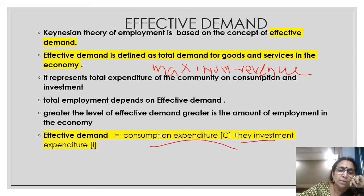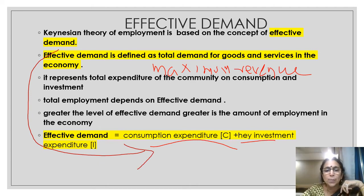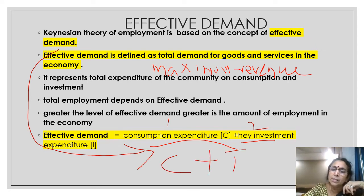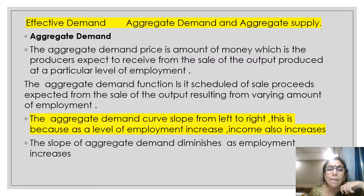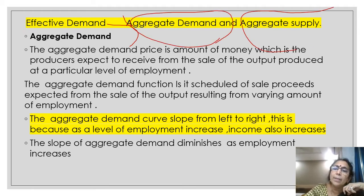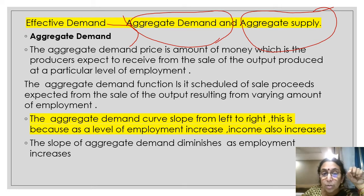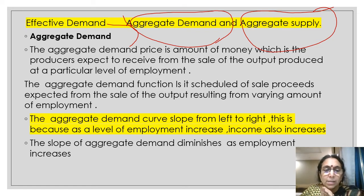What is effective demand? Effective demand means it is the total expenditure in an economy — total expenditure means consumption plus investment. In an economy, people spend money basically on consumption and investment. According to Keynes, effective demand depends upon two factors: aggregate demand and aggregate supply. Employment depends upon effective demand, and effective demand depends upon aggregate demand and aggregate supply.